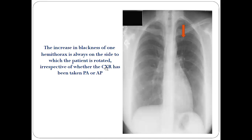Another important finding in rotation is that there will be increased blackness of the hemithorax toward which the patient has rotated, irrespective of whether the chest x-ray was taken PA or AP. Whichever side the patient has rotated toward will appear more black compared to the other side.